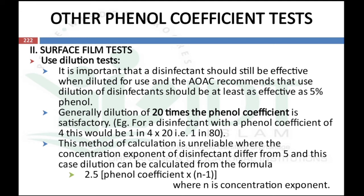Generally, a dilution of 20 times the phenol coefficient is satisfactory. For example, a disinfectant with a phenol coefficient of 4 would be effective at a 1 in 80 dilution (1 in 4 × 20). This method of calculation is unreliable where the concentration exponent differs from 5. In that case, dilution can be calculated from the formula: 2.5 × phenol coefficient × (N−1), where N is the concentration exponent.